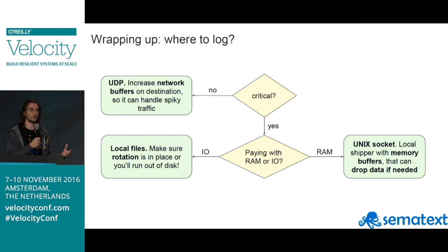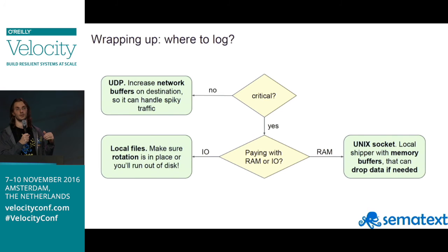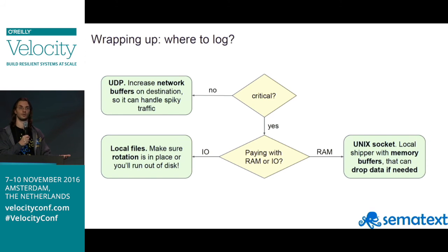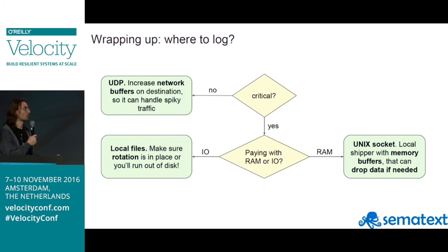To sum up: if logging isn't critical, use UDP — it can be UDP to a local log shipper — so the application doesn't have to worry about the pipeline and can continue working if something goes wrong. If logging is critical, you have to pay: either with I/O by writing to a local file, or with memory by having a local shipper that buffers things in memory.